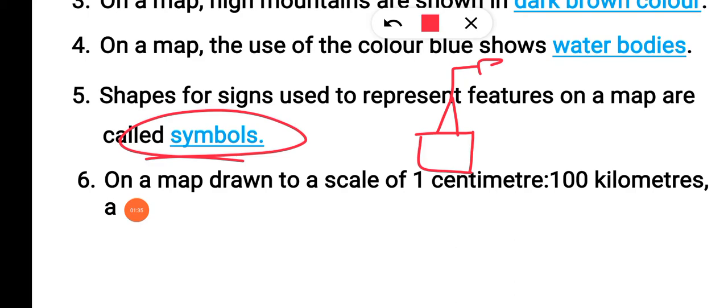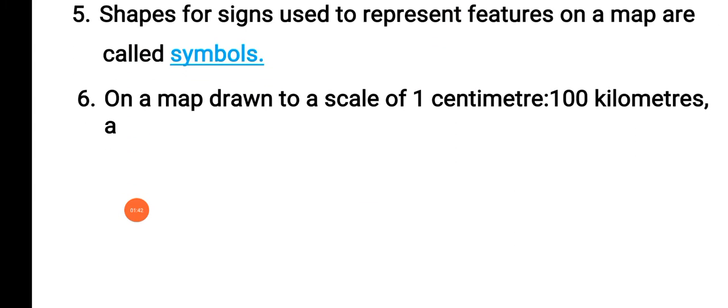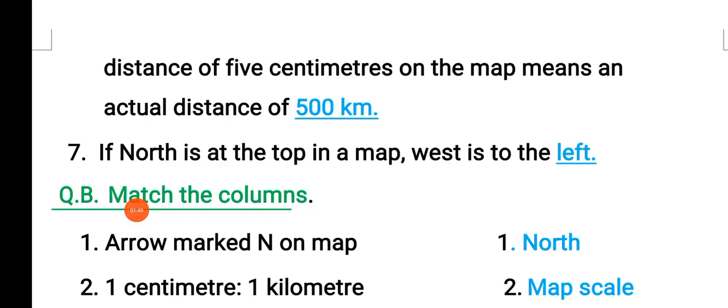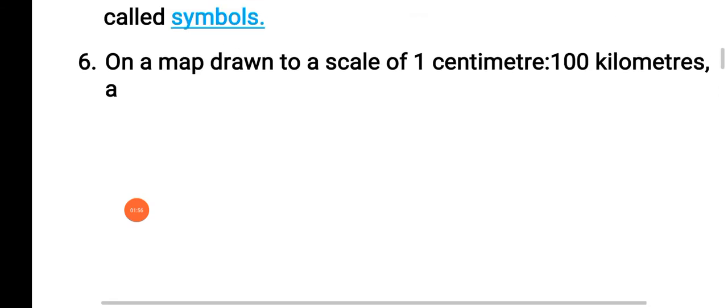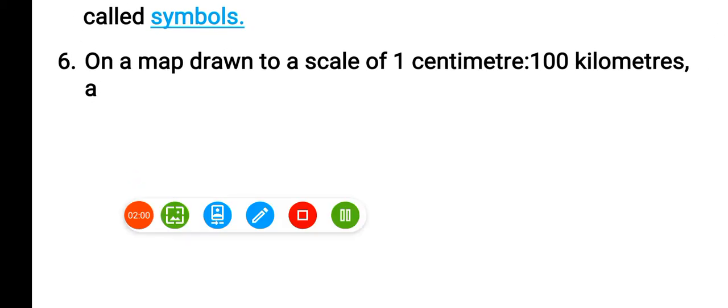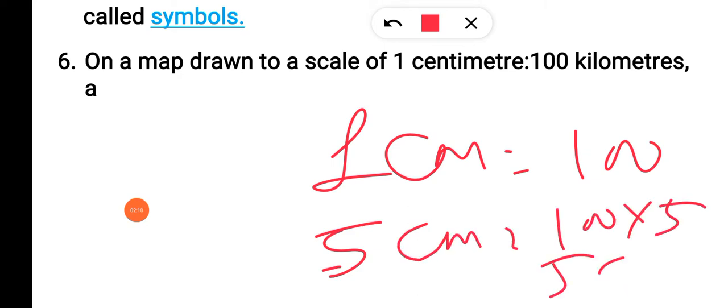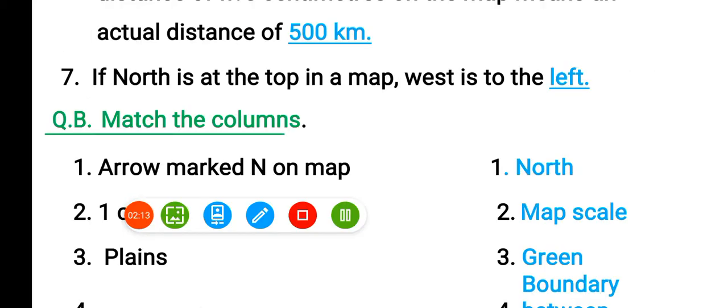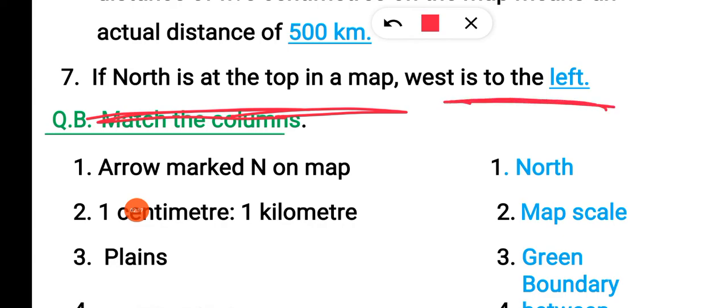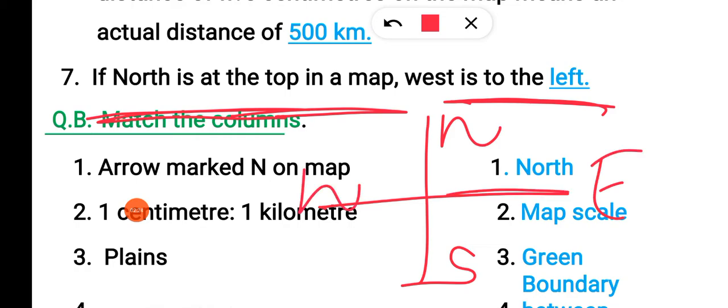On a map drawn to scale, one centimeter equals one hundred kilometers. A distance of five centimeters equals five hundred kilometers. Look carefully here - if one centimeter shows one hundred kilometers, then what will five centimeters show? Hundred multiplied by five equals five hundred. On a map, if north is at the top, then west is to the left.